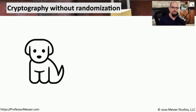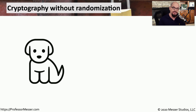One of the core elements of cryptography is that there is a sufficient amount of randomization so that the resulting encrypted data looks nothing like the original plain text. If there was encrypted data that looked similar to the original plain text, then there may be a way for an attacker to reverse engineer and determine what the original text may have been.